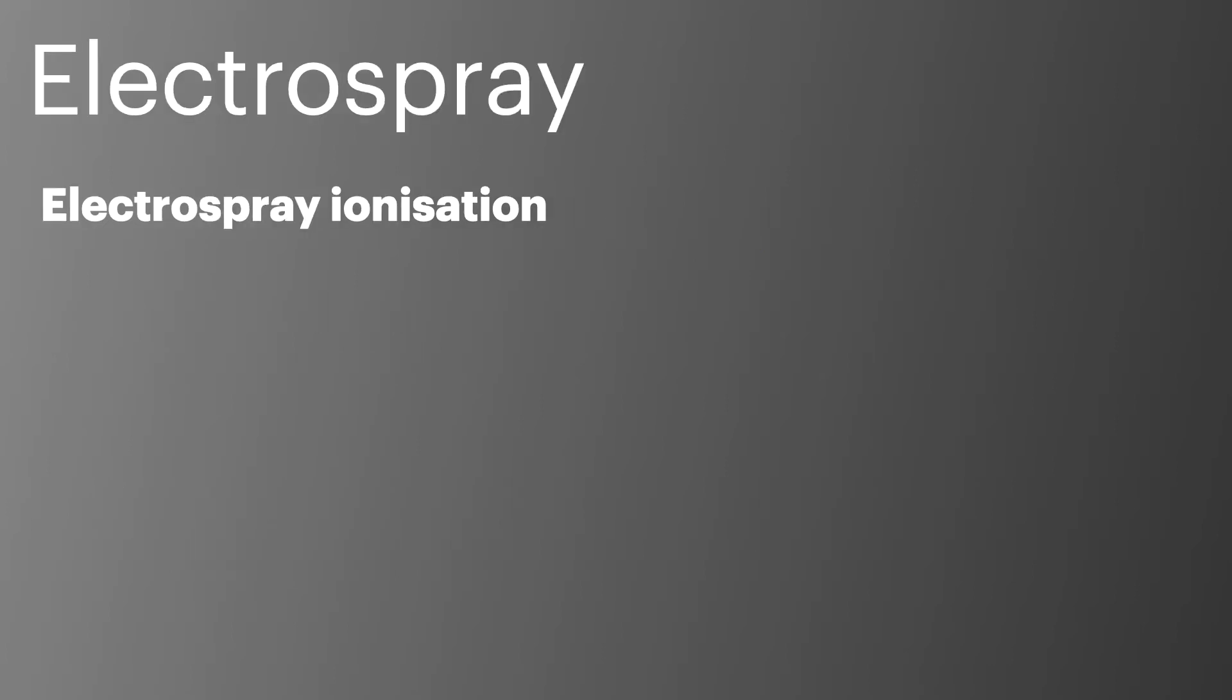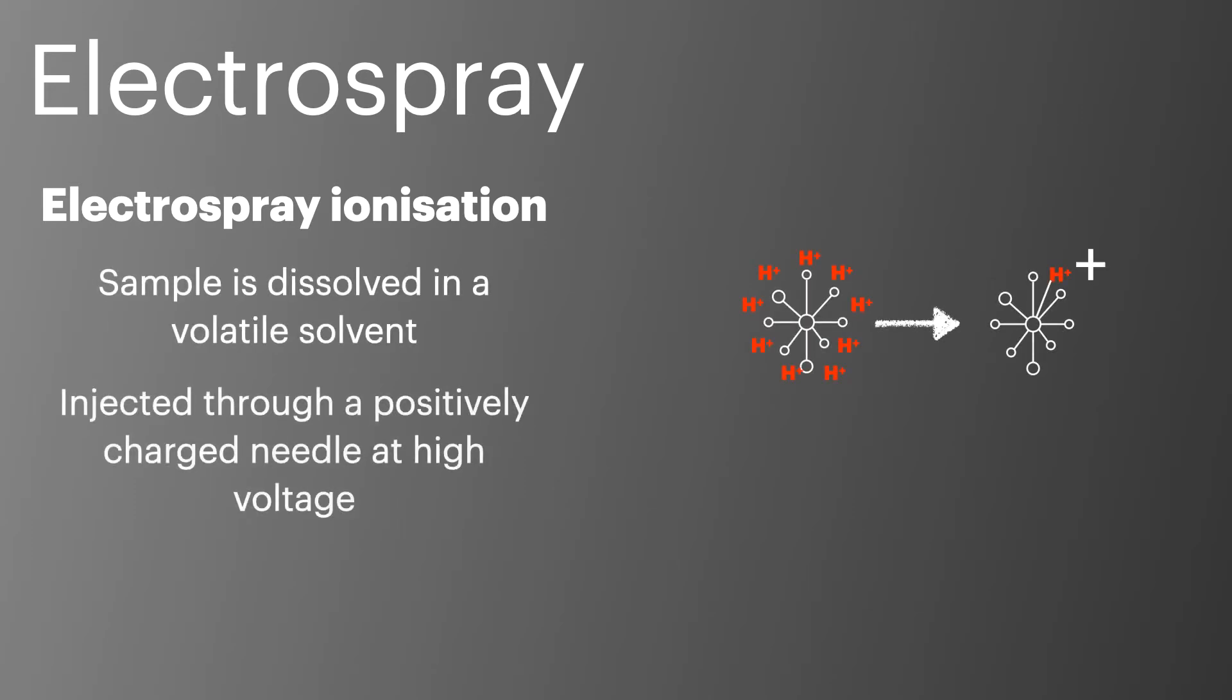In the second method, electrospray ionization, the sample is first dissolved in a volatile solvent such as methanol. This is then injected through a positively charged needle which has a very high voltage. This causes each molecule to gain a proton from the solvent which produces MH plus ions. This can be shown with this equation, again remembering to show the state symbols of the samples as gases.